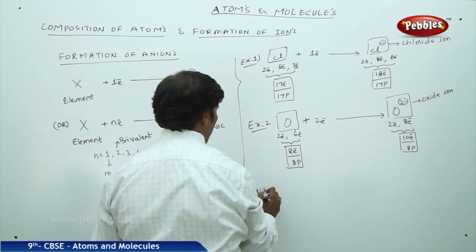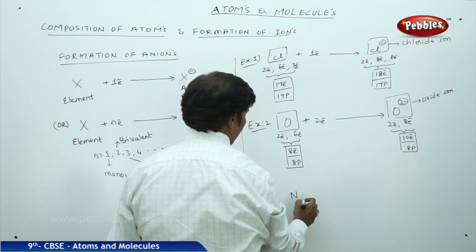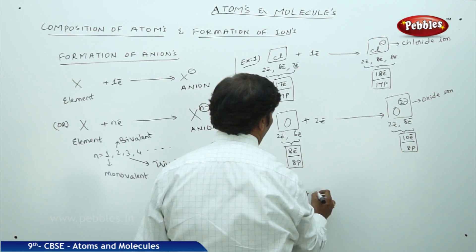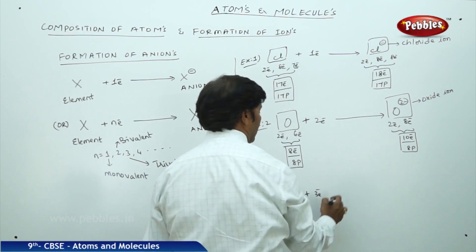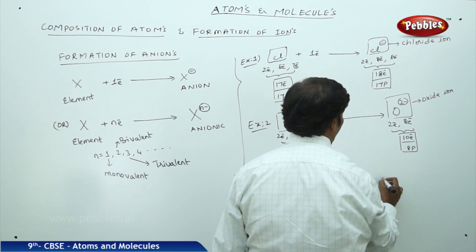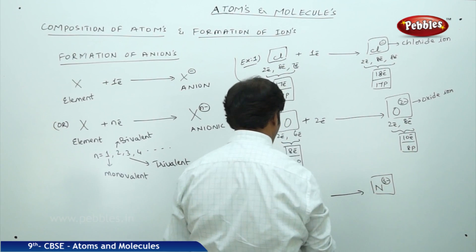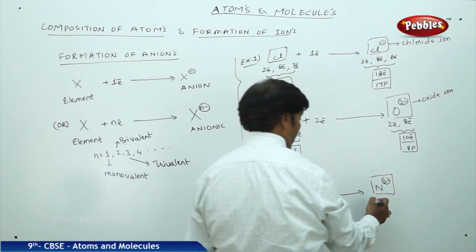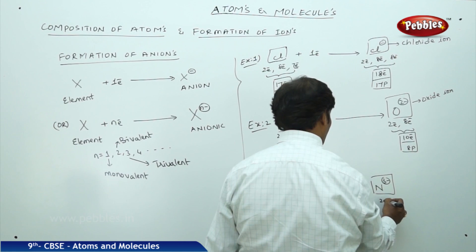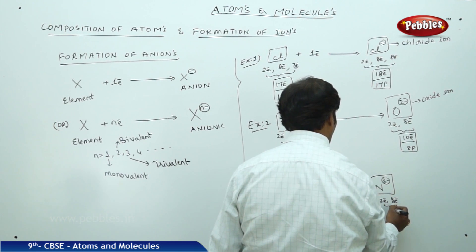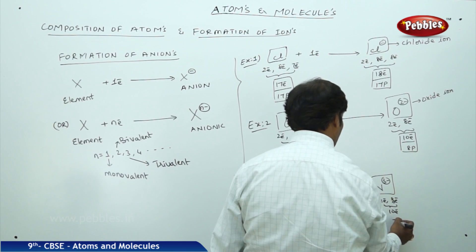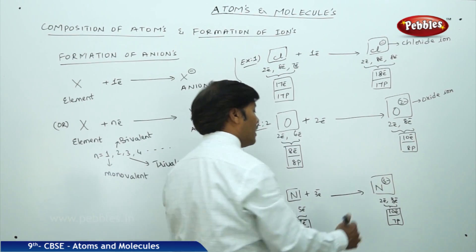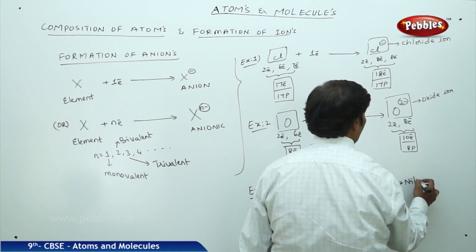In example 3, take nitrogen — it contains 2 and 5 electrons, with 7 electrons and 7 protons in the neutral state. Nitrogen gains 3 electrons, acquiring 3 units of negative charge, and now contains 2, 8 electrons — 10 electrons total — against 7 protons. This anion is called the nitride ion.